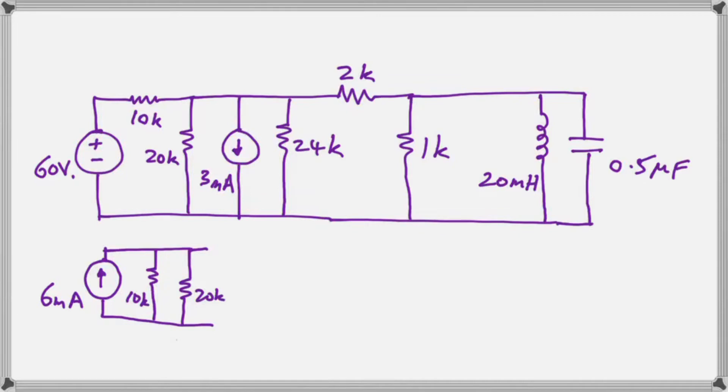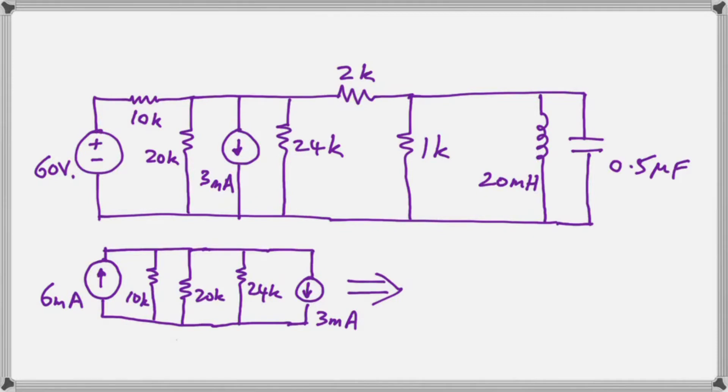So now you can see that it fits very nicely in parallel with the 20 kOhm. And when we do a parallel reduction on that we've eliminated a bit of our circuit. So we also include the 24 kOhm because that's in parallel and the other current source. And now we have two current sources and one resistor when we find the parallel combination of those three. As you can see, it works out to 3 milliamps with a 5,217 Ohm resistor across it.